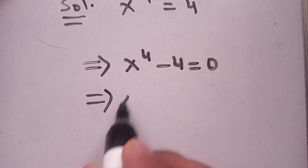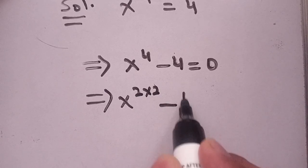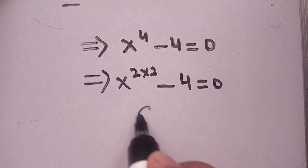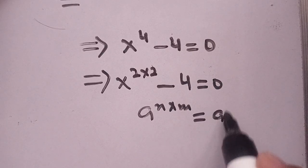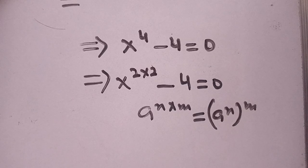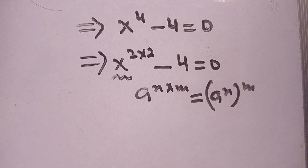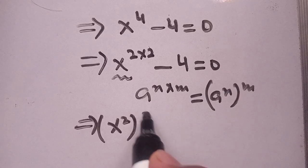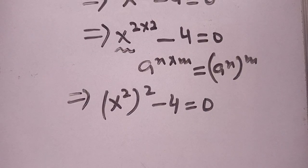In the next step, we can write x power 4 as 2 times 2, giving us x power 4 minus 4 is equal to 0. Now, we know the identity: a power n times m is equal to a power n, bracket, power m. Applying this identity, we get x power 2, bracket, power 2, minus 4 is equal to 0.